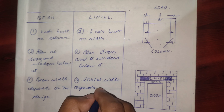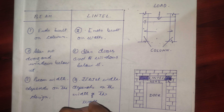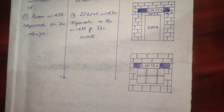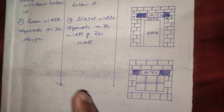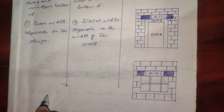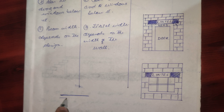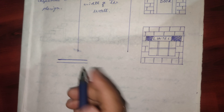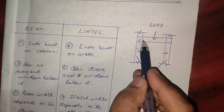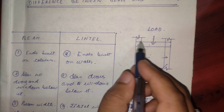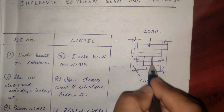Moving on to the second difference: a beam has no window or door below it — directly, there is no window or door below it. But a lintel — whenever there is an opening, there is a lintel. That means whenever there is a door or a window, we must provide a lintel. So a beam has no doors and windows below it, and a lintel has doors and windows below it.